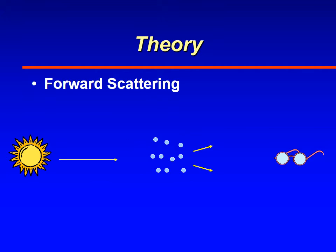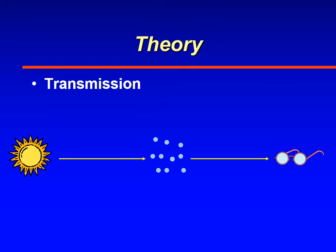You can also have forward scattering, where the light strikes these particles but then continues on in different directions. This is the reason why the sky is blue, because of air molecules scattering the light. Finally, you can have transmission, where some of the light actually makes it through.